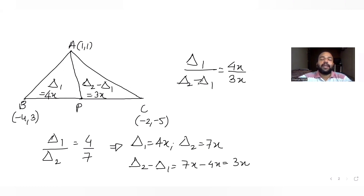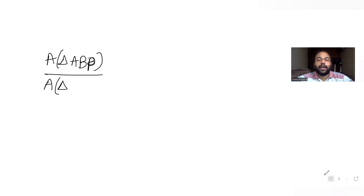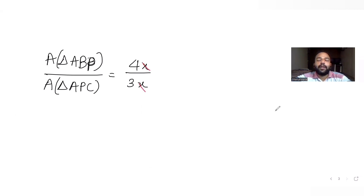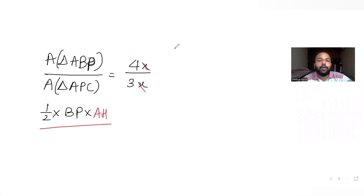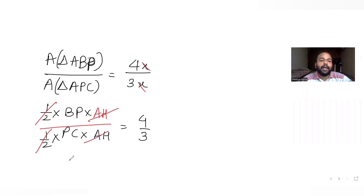So I get Δ1 upon (Δ2 minus Δ1) = 4x upon 3x. Since Δ1 is the area of triangle ABP, and using a shared perpendicular height AH from A to BC, the ratio of area of triangle ABP to area of triangle APC gives BP upon PC = 4 upon 3.